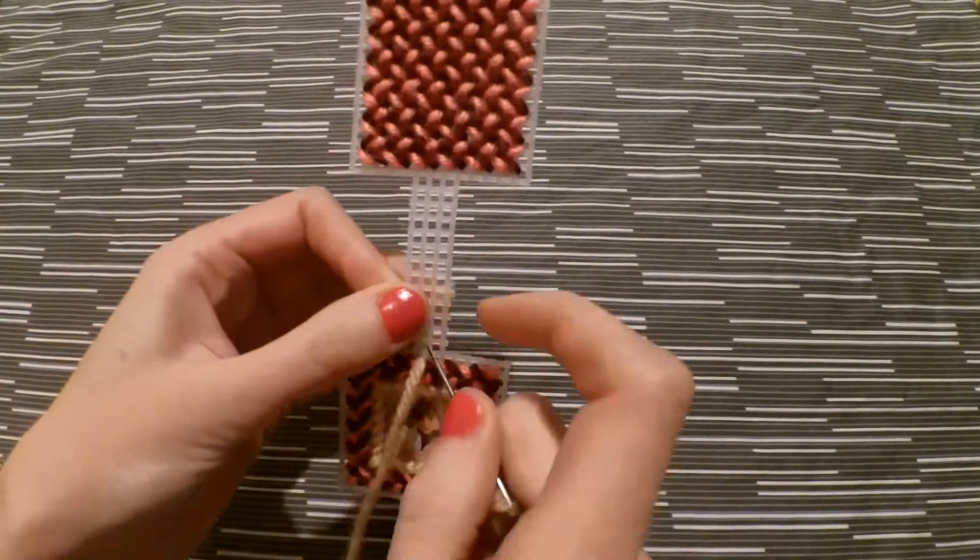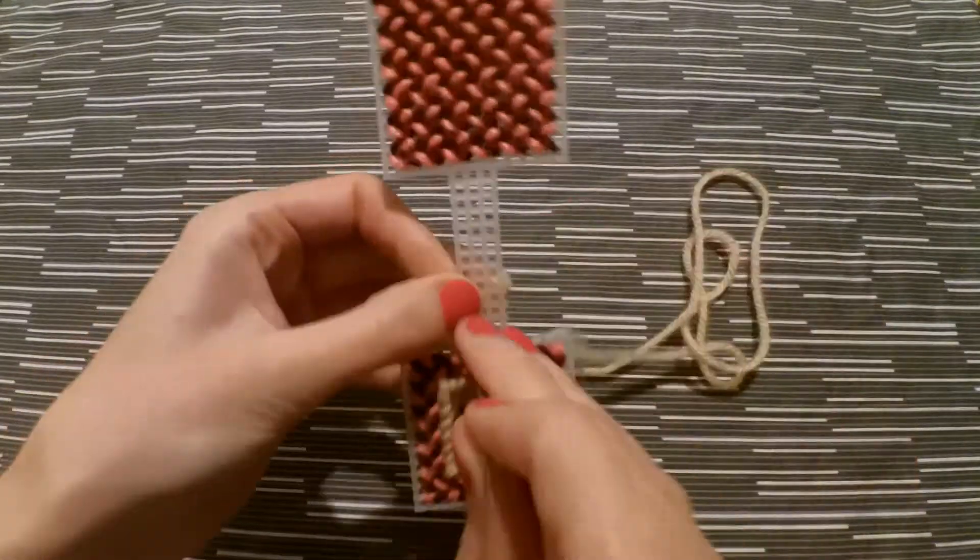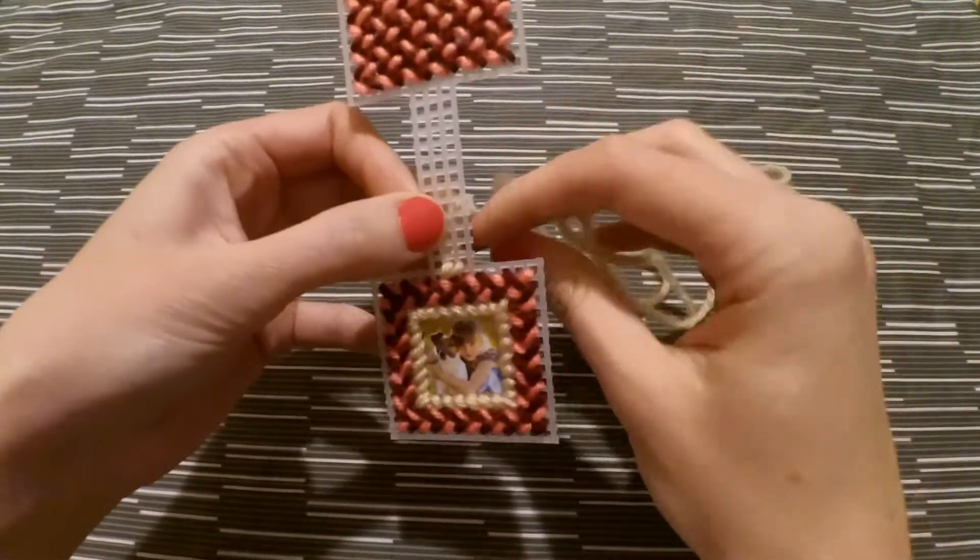And now you're just going to use a tent stitch for the bridge and then make sure to finish off both sides with an overcast stitch.